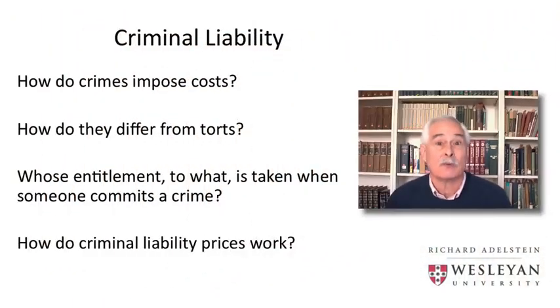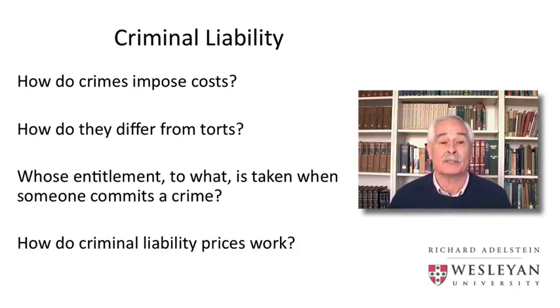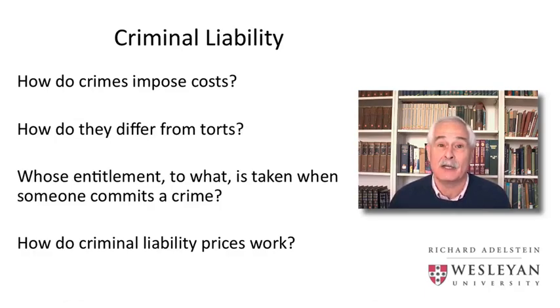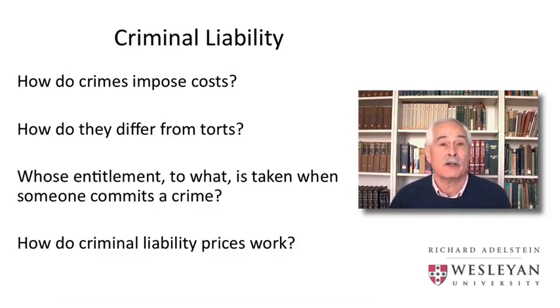Hi, everybody. Welcome back. In this lecture, I'd like to extend the notions of liability systems as distinguishers between efficient and inefficient cost imposition from the tort system to the system of criminal liability, the criminal process, and the criminal courts and prisons. I'll begin to address four important questions about criminal liability: How do crimes impose costs? And in particular, how do the costs imposed by crimes differ from the costs that are imposed by torts? Whose entitlement and to what exactly is taken when someone commits a crime? And finally, how does the system of criminal liability work, and how are punishments understood as criminal liability prices fixed and with what effect?